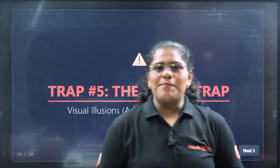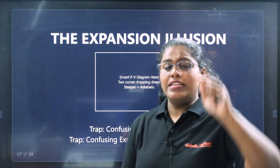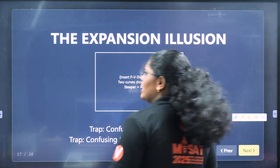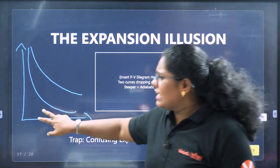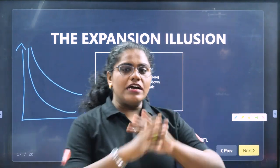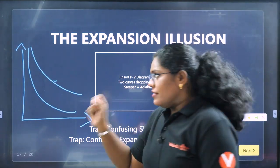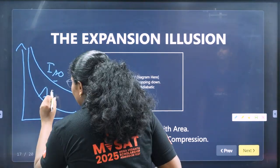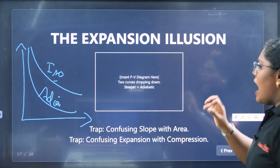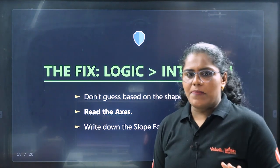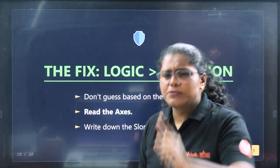Trap number 5 is the Graph Trap. Consider a graph comparing adiabatic and isothermal processes in thermodynamics. Check the X and Y axes carefully. The question may give four options that interchange adiabatic and isothermal labels. You might confuse which curve is which. Always click on the axis labels, verify that slopes and differences are correct, and then use the slope formula to confirm your answer.